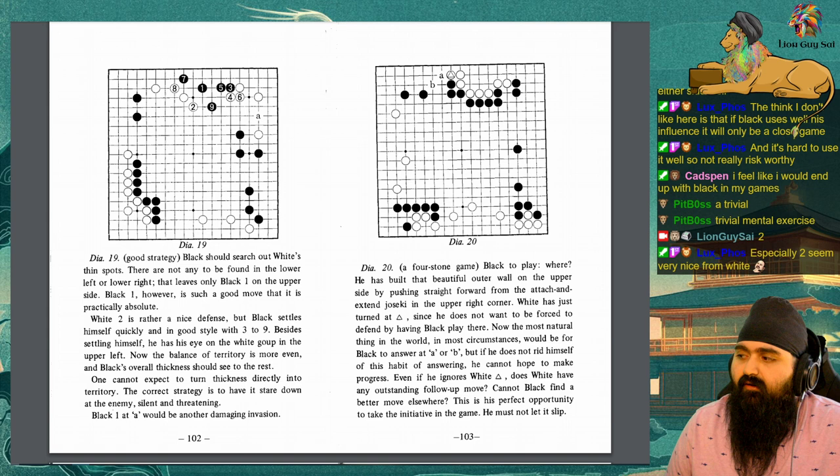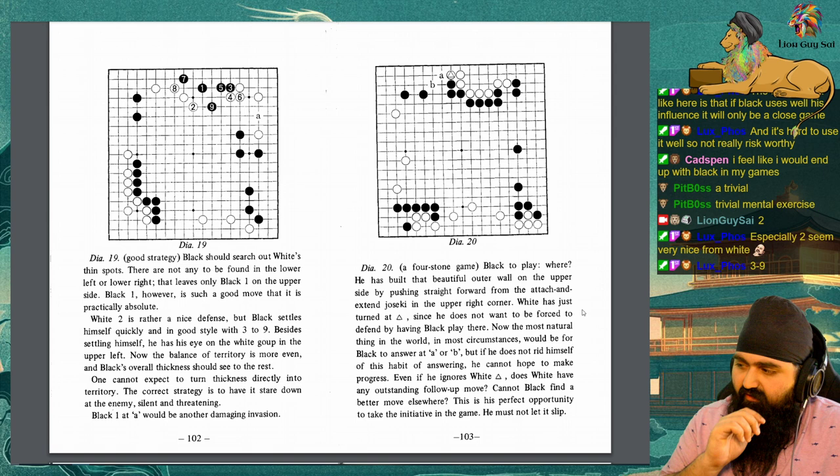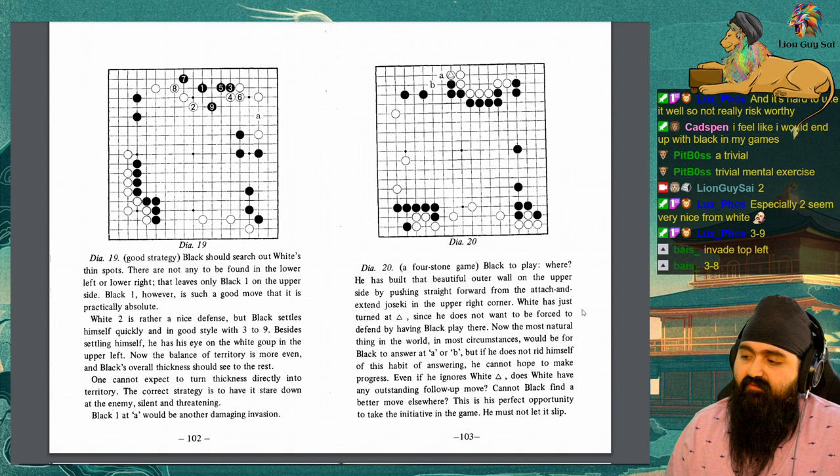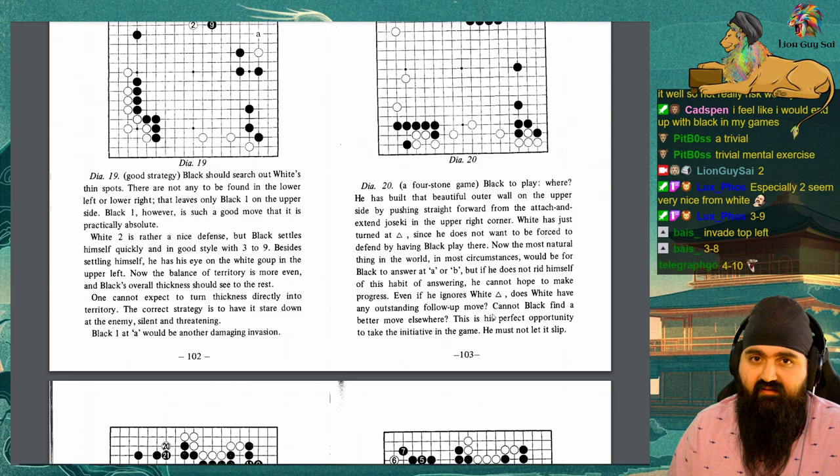Diagram 20. A 4 stone game. Black to play. Where? He has built that beautiful outer wall on the upper side by pushing straight forward from the attach and extend joseki in the upper right corner. White has just turned at the marked stone, the triangle stone, since he does not want to be forced to defend by having black play there. Now, the most natural thing in the world, in most circumstances, would be for black to answer at A or B. But if he does not rid himself of this habit of answering, he cannot hope to make progress. Even if he ignores white's triangle stone, does white have any outstanding follow up move? Cannot black find a better move elsewhere? This is his perfect opportunity to take the initiative in the game. He must not let it slip.